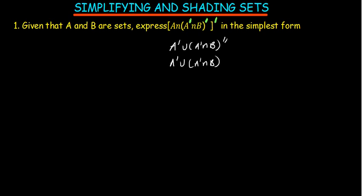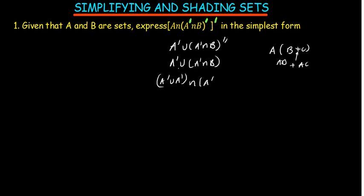From here, we can distribute further. This is more like multiplying — think of it when you have A times (B + C), that gives A·B + A·C. So same here: this will be A complement union A complement, and then — with the sign intersection — A complement union B. The only thing separating them is the intersection in the middle.